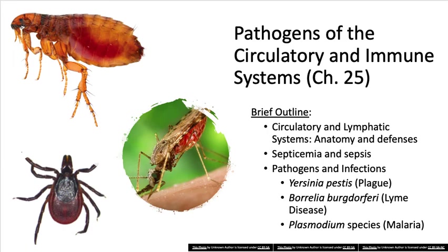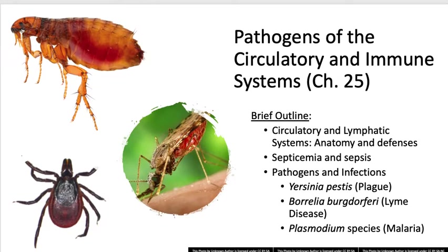Today we're going to be discussing pathogens and infections of both the circulatory and immune systems. We're going to cover the circulatory and lymphatic systems and the locations in which infections can occur. We'll go over sepsis and septicemia, which are bloodstream infections. The three pathogens we're covering today are all examples of zoonotic infections or vector-borne diseases. For the plague we've got the flea, for Lyme disease we have the tick, and for malaria we have the mosquito.